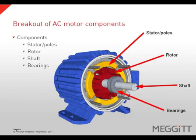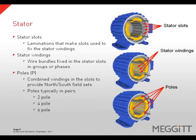To understand how electrical motor issues manifest themselves in the vibration world, it is important to first understand the components that make up an electrical motor. An electrical motor is made up of a shaft to which the rotor is mounted, riding on bearings. The rotor assembly rotates within the stator. A stator is a part of the motor housing that has laminations which make the slots used to fix the stator windings. The windings are a series of wire bundles in a stator slot that create groups or phases. We also have stator poles — windings in the slots that are combined to provide a north-south field set. Poles are typically in pairs such as two-pole, four-pole, or six-pole motors.